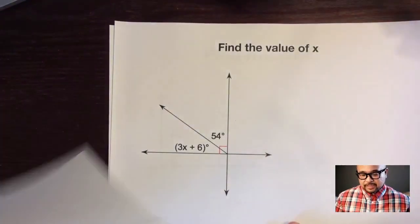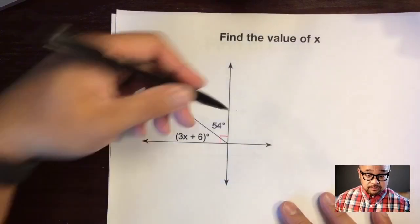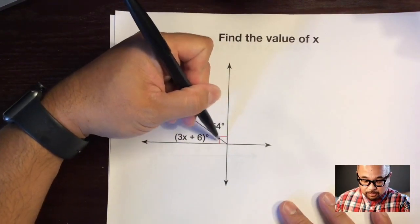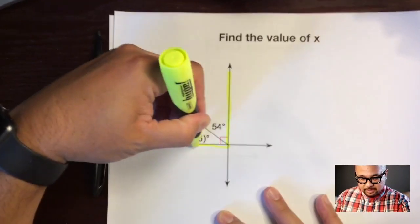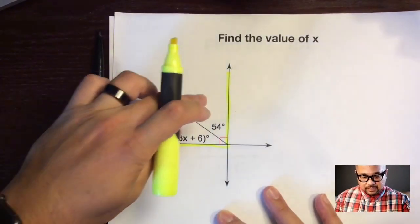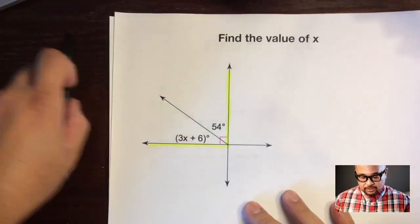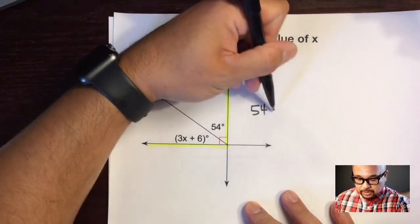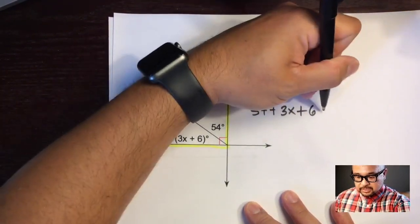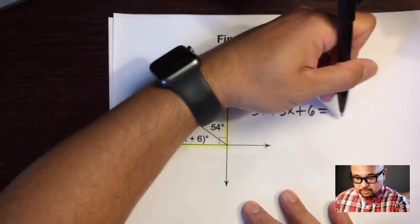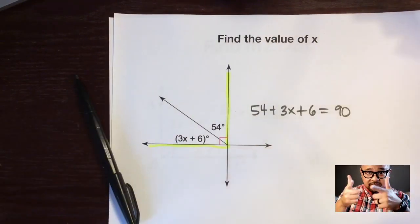Let's set up that equation: 54 plus 3x plus 6 is equal to—let's find the value of x. Again, what's the key? This little red square right here, saying that this big angle that is made up of these two mini angles adds up to 90 degrees. So let's set up that equation: 54 plus 3x plus 6 is equal to 90 degrees.